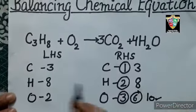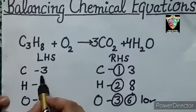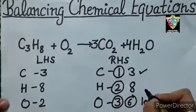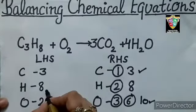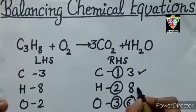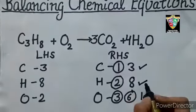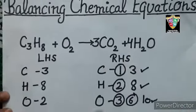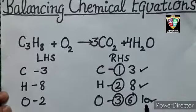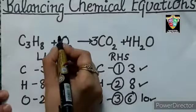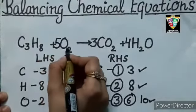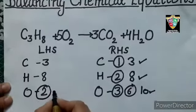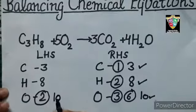Now compare carbon. You have 3 on LHS and 3 on RHS, balanced. Hydrogen, you have 8 on LHS and 8 on RHS, balanced. But oxygen, you have 2 on LHS and 10 on RHS. So simply multiply with 5. 5 times 2 is 10. Now oxygen atoms will be 10.